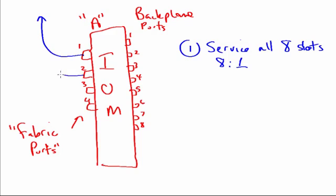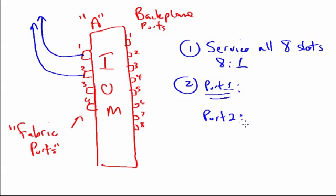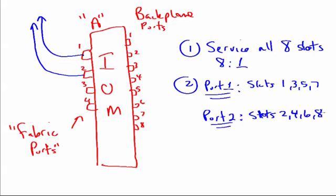If we have two of these connected, that's our next option. Port one is going to handle slots one, three, five, and seven. Port two will handle slots two, four, six, and eight. So now we have a four-to-one oversubscription. With two fabric interconnect ports plugged in, slots one, three, five, and seven go across port number one, and two, four, six, and eight go across port number two. This is how we force a load balance of traffic across these links.